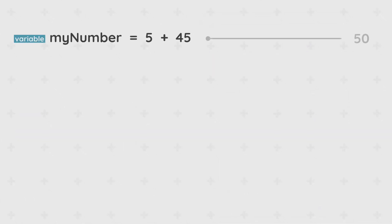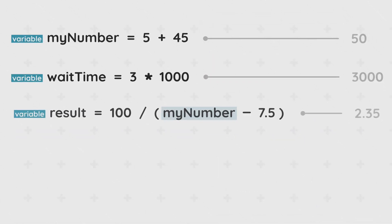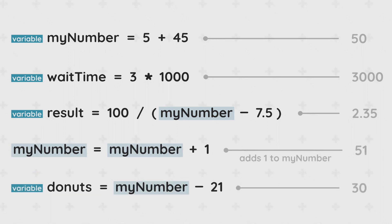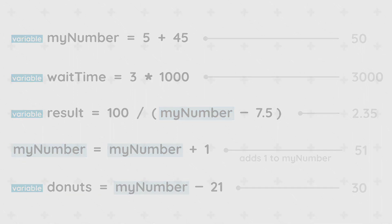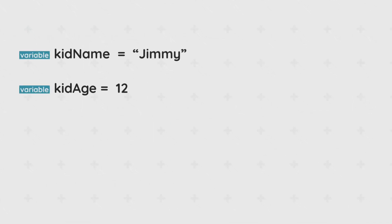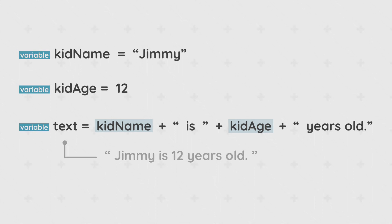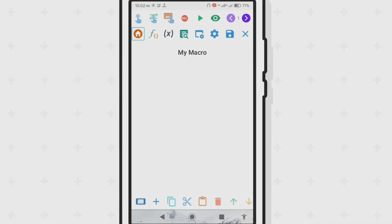You should also note that some data types can be used with arithmetic operators. One use case is with numbers. Strings can also be used with the plus operator to combine multiple texts together, and can also be combined with some data types like numbers.